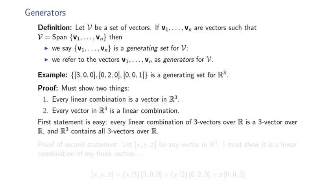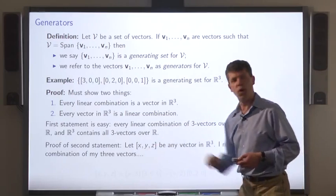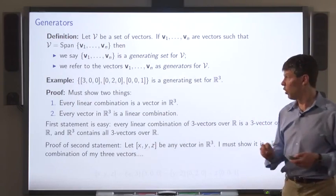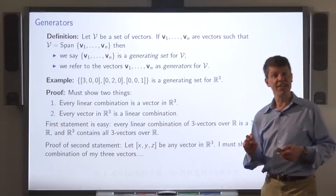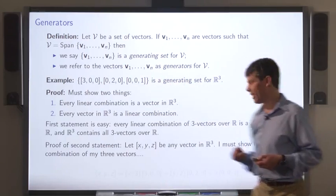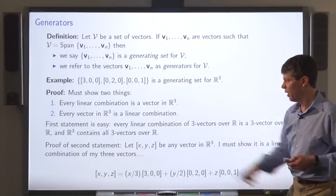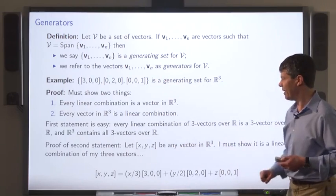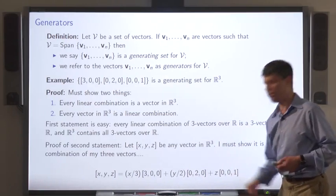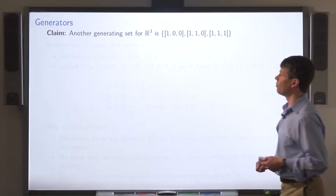What about the second statement? We prove this as follows. Let x, y, z be any element of R3, and I want to show that I can express this vector as a linear combination of these three vectors. Here's a formula: the vector (x, y, z) can be expressed as x over 3 times the first vector, plus y over 2 times the second vector, plus z times the third vector.